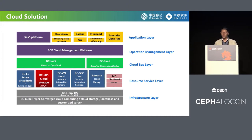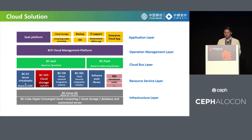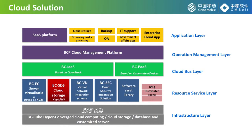China Mobile's cloud computing product system is called Big Cloud. It covers services of IaaS, PaaS, and SaaS. The Big Cloud is currently responsible for China Mobile's private cloud, public cloud, performance management cloud, OA, and other platforms. The cloud products have provided IT service for more than 30 China Mobile provincial and professional companies, including business support, network management, and information management systems. Besides, the products have been applied in government, finance, manufacturing, transportation, and other industries.